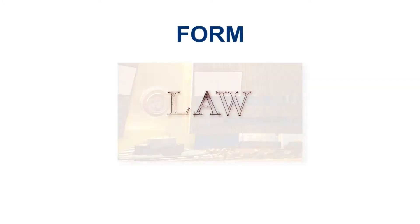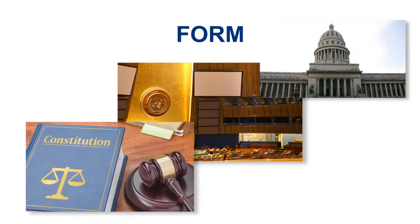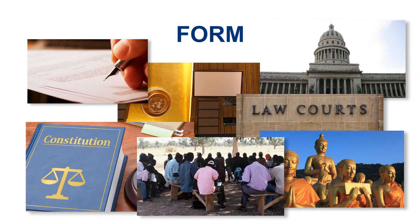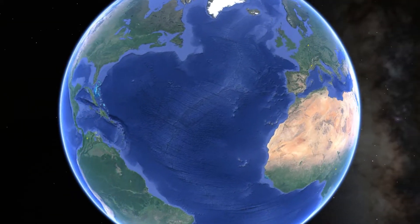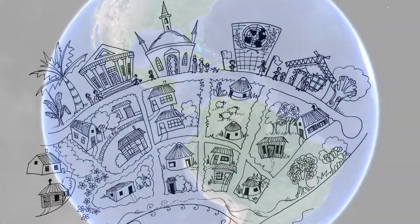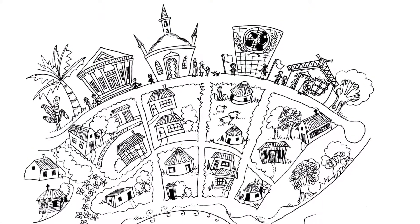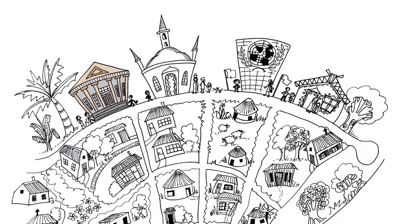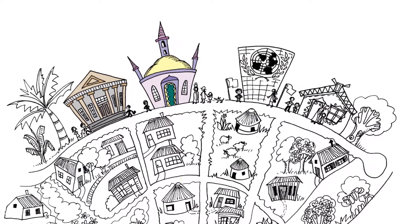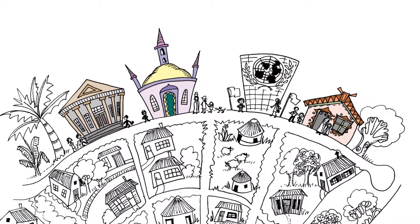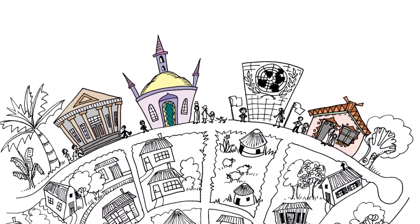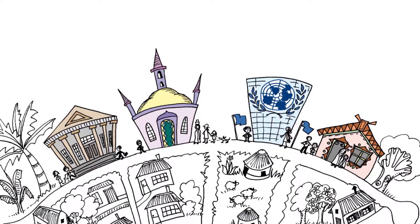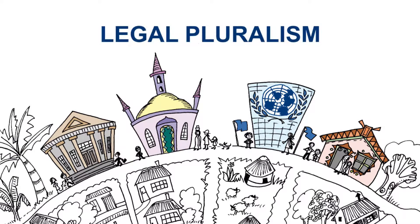Law can be expressed through treaties, legislation, constitutions, judicial cases, decrees, religious doctrine, or customary practice. Not all law is written. Different countries have different legal systems. Many countries have multiple legal systems that operate side by side — for example, a country may have statutory law passed by a legislature, religious law determined by religious courts, and customary law administered by traditional authorities. The country may also be subject to international law obligations under a treaty. The existence of multiple overlapping legal systems is called legal pluralism.